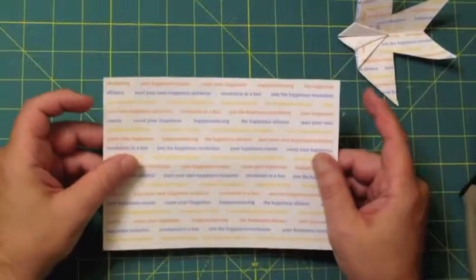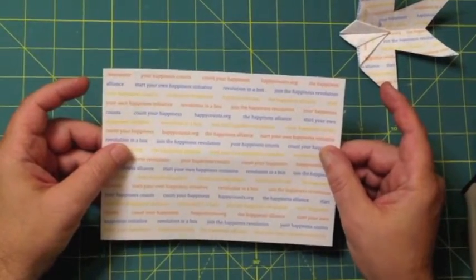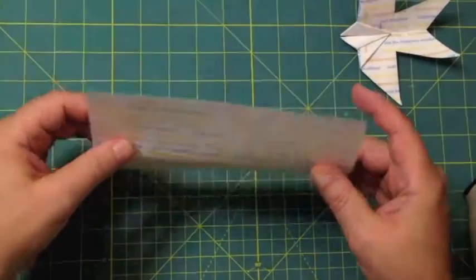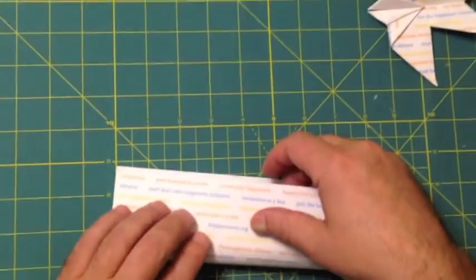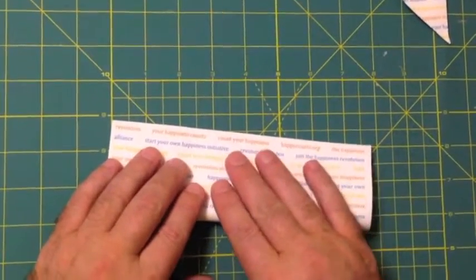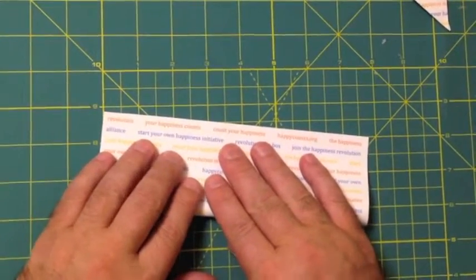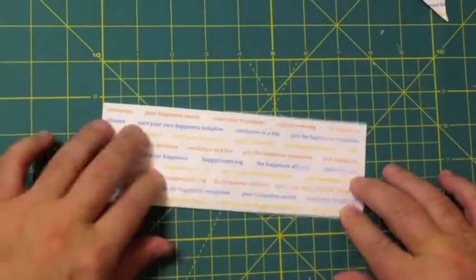So you start with your piece of paper, a golden rectangle shape, and you fold it in half. Crease it.